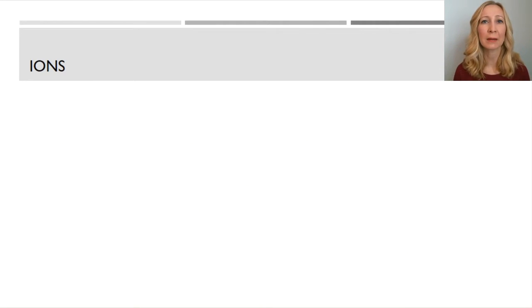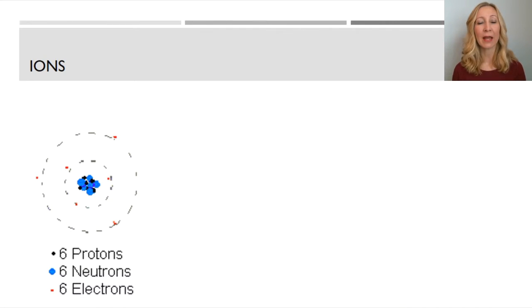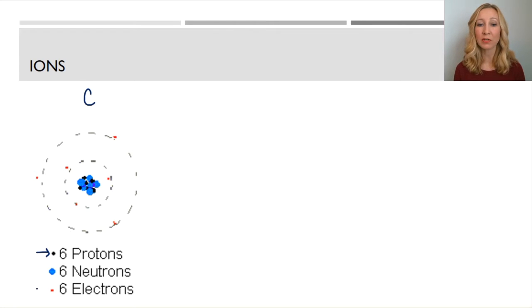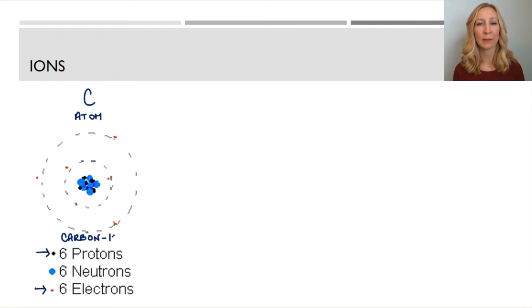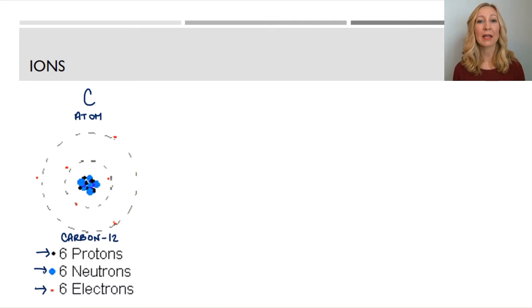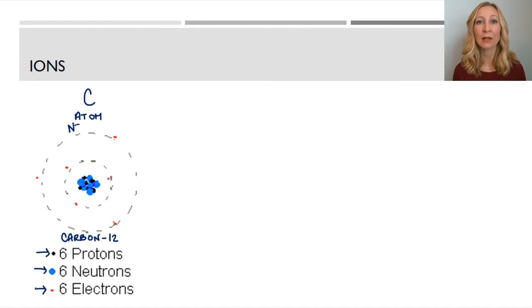Let's take a look at some ions. We have an atom here that has 6 protons, 6 neutrons, and 6 electrons — this is a carbon atom. I know it's an atom because it has equal numbers of protons and electrons. This is carbon-12: it has 6 protons because all carbon atoms have 6 protons, 6 neutrons for this specific isotope, and 6 electrons. Because it has equal numbers of protons and electrons — equal positive and negative — this is neutral.